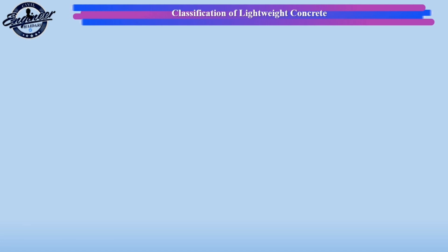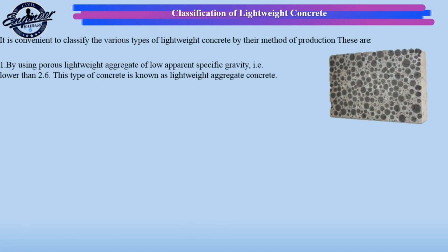It is convenient to classify the various types of lightweight concrete by their method of production. The first method is by using porous lightweight aggregate of low apparent specific gravity, i.e. lower than 2.6. This type of concrete is known as lightweight aggregate concrete.